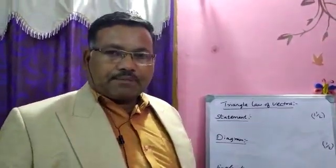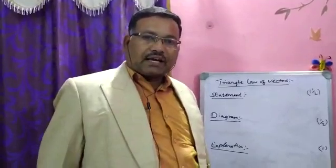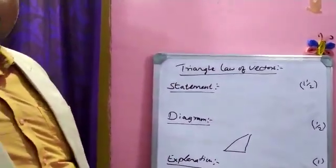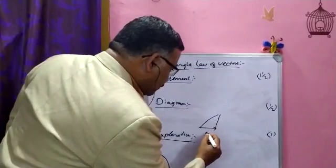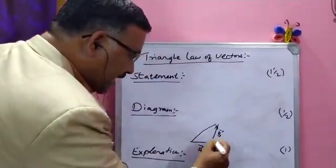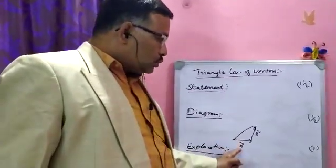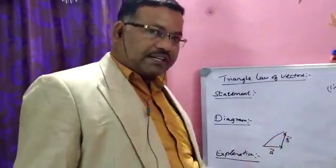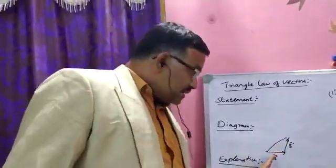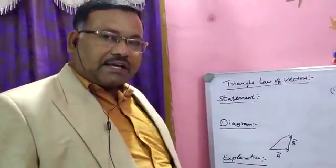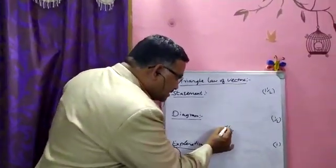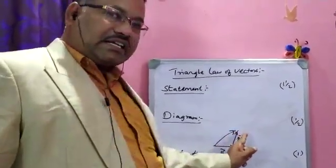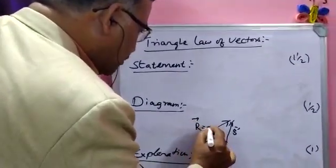If two vectors are represented by the two sides of a triangle — taking vector A and another vector B — if A and B are represented by two sides of a triangle taken in order, then their resultant of A and B is represented in magnitude and direction by the third side of the triangle taken in reverse order. A and B go anti-clockwise; the resultant is in the clockwise direction. This resultant means A plus B.